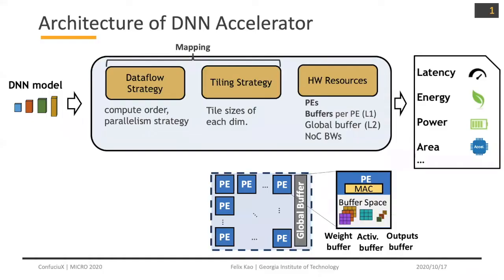The architecture of the DNA accelerator includes three parts: data flow strategy, tiling strategy, and hardware resources. Data flow strategy includes compute order and parallelism strategy. Tiling strategy includes tiling sizes of each dimension. And hardware resources includes PE, buffer inside each PE, and global buffer and bandwidth.